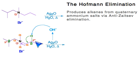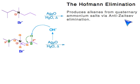This carbon is secondary and this one is tertiary. The rule is: remove the beta hydrogen from the least substituted beta carbon. That gives you the least substituted alkene as your product, and that's called anti-Zaitsev elimination — or in this case, the Hofmann elimination.